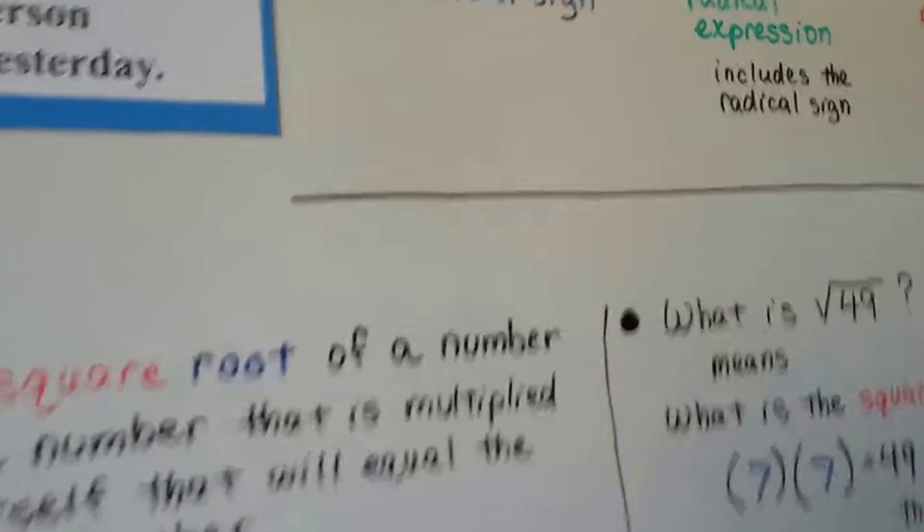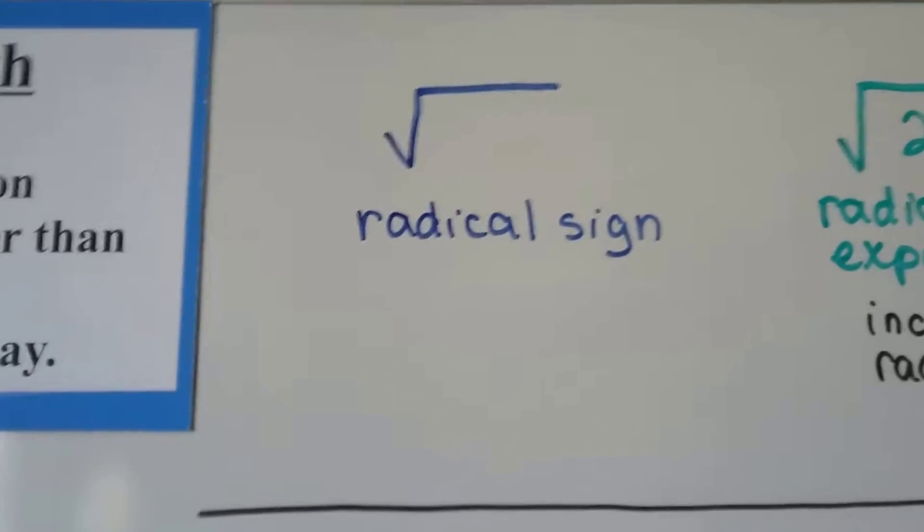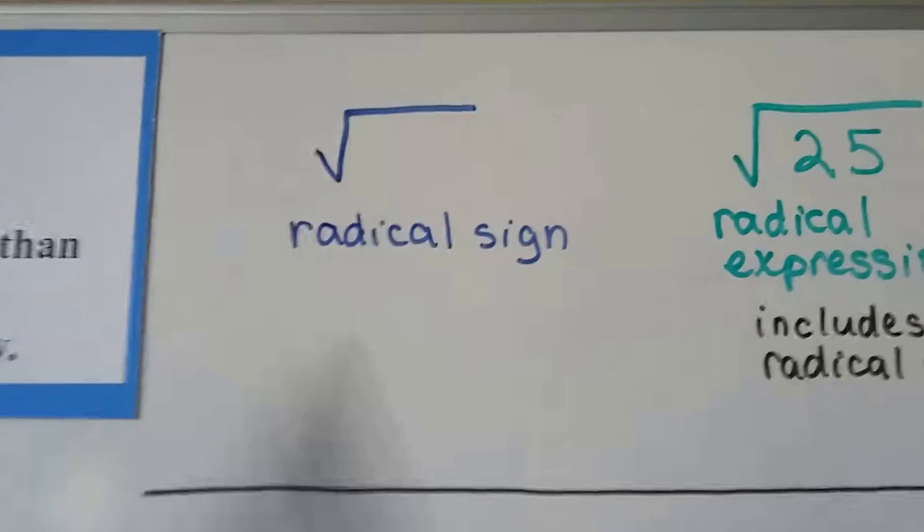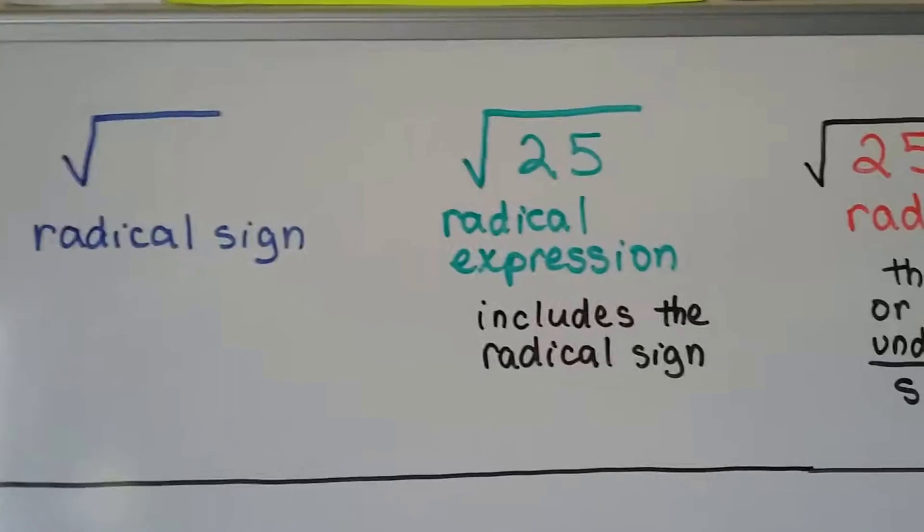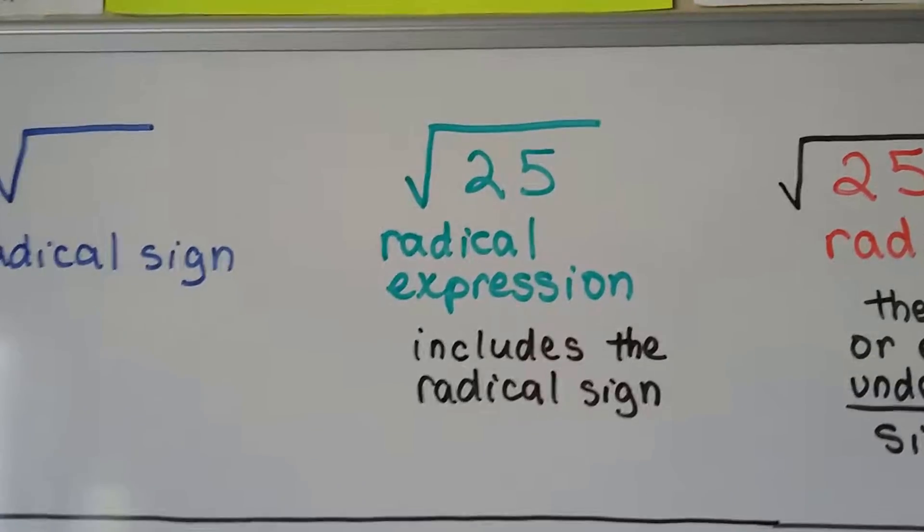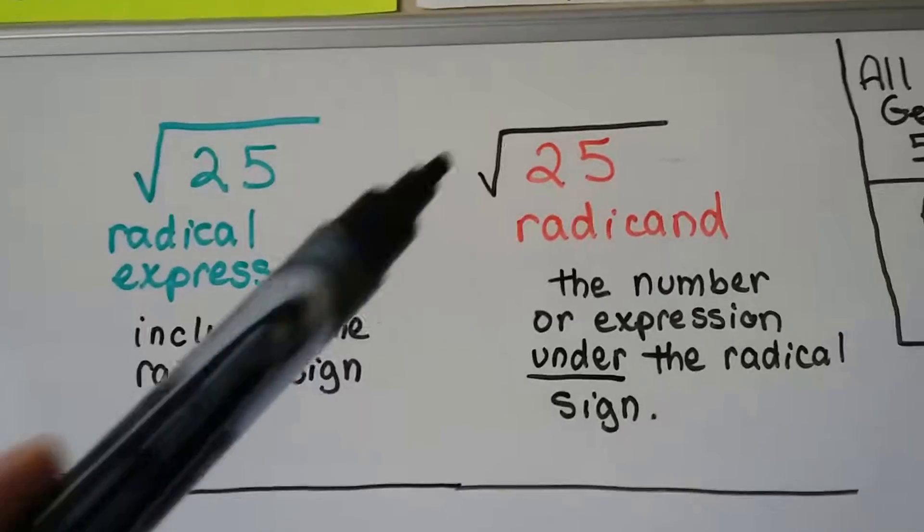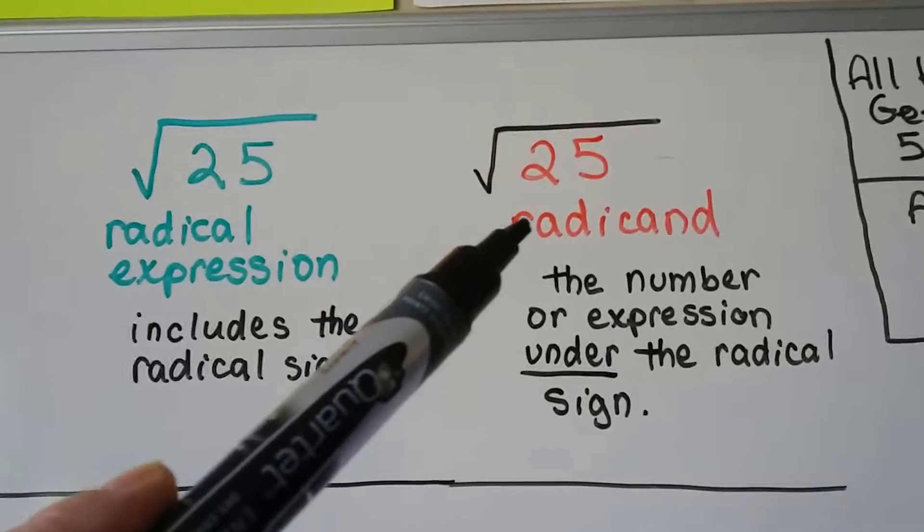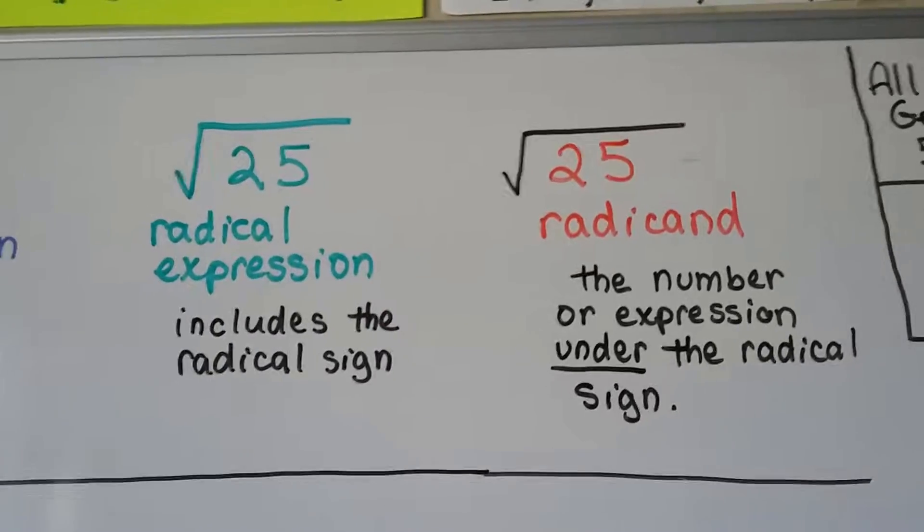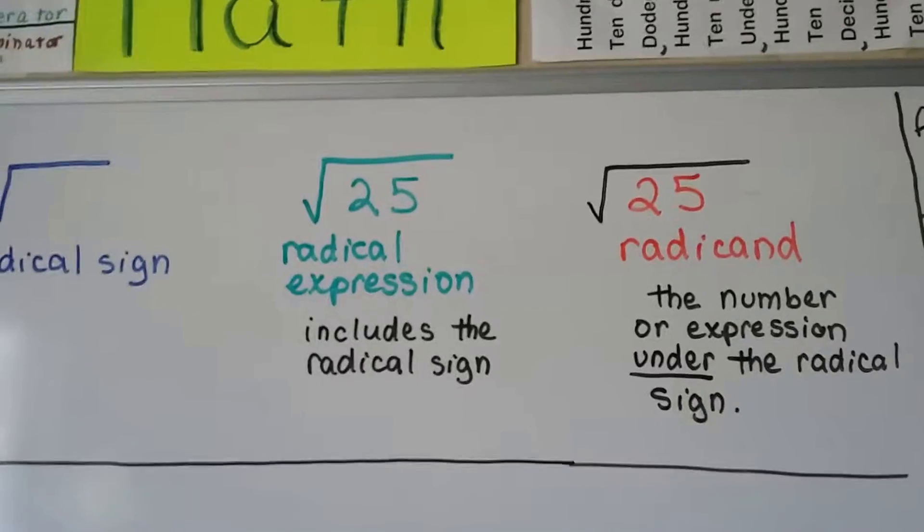Let me show you these symbols here. This is a radical sign. Looks like a long division sign with a little hook at the end. This entire green thing is a radical expression that includes the radical sign and the number that's beneath it. This red part, this 25, is called the radicand. It's only the number or expression that's under the radical sign.